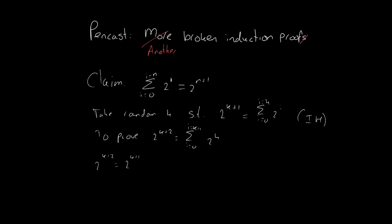Well, that's just 2 to the power k plus 1 plus 2 to the power k plus 1. I know already that 2 to the power k plus 1, I can use the induction hypothesis on that. That's the sum of the first k entries.